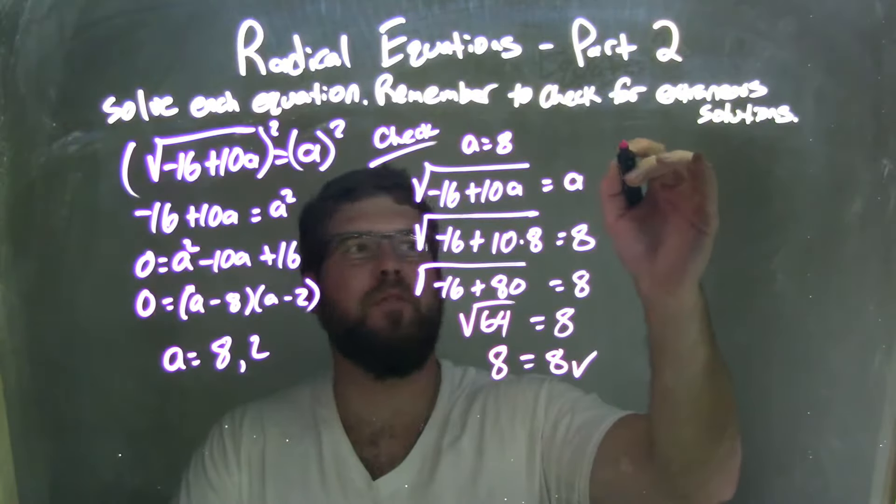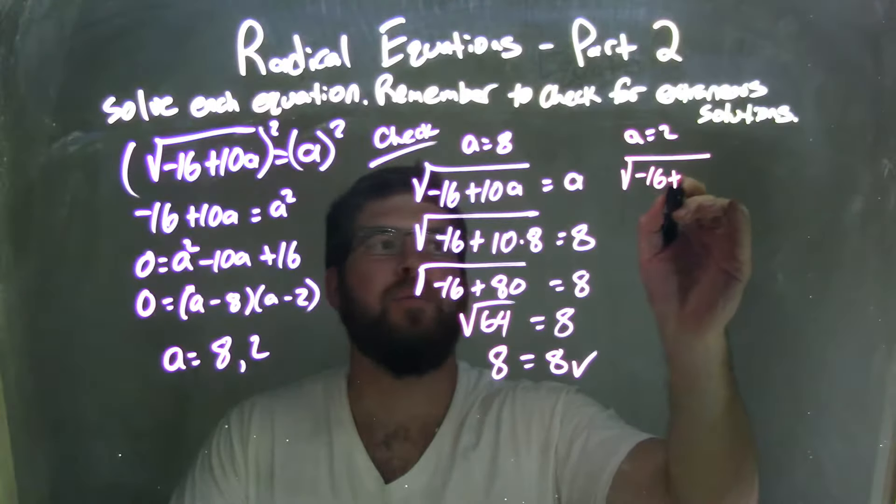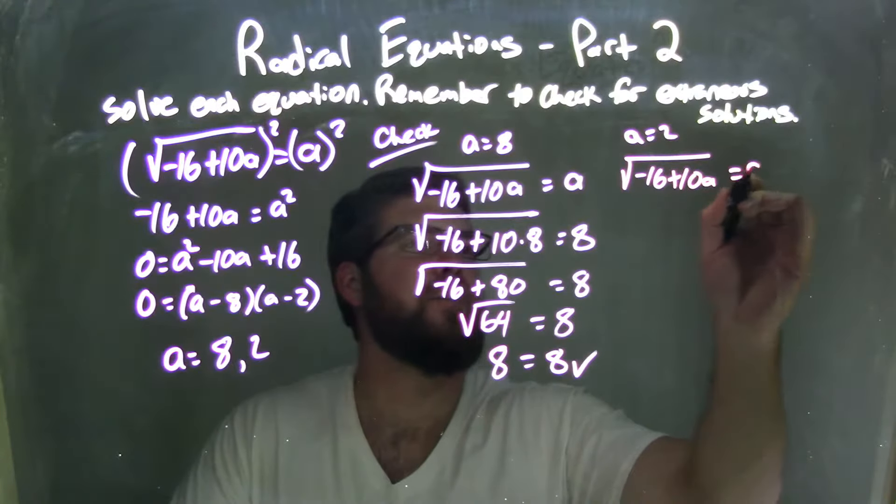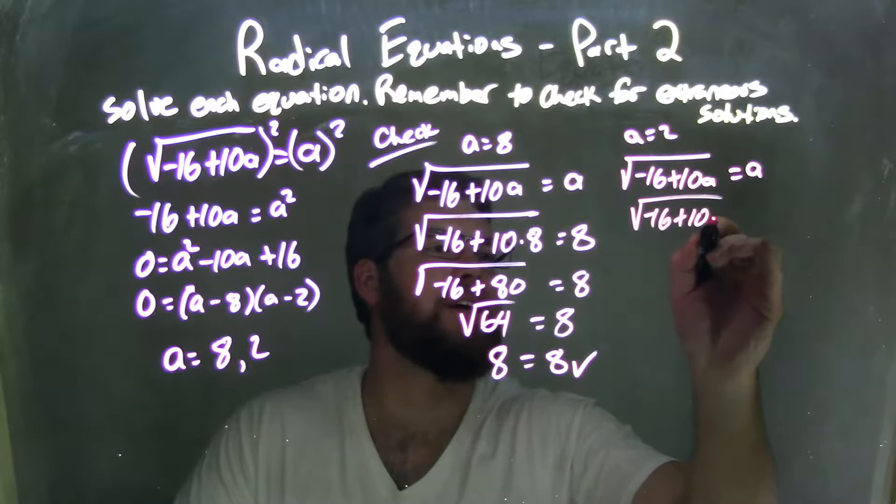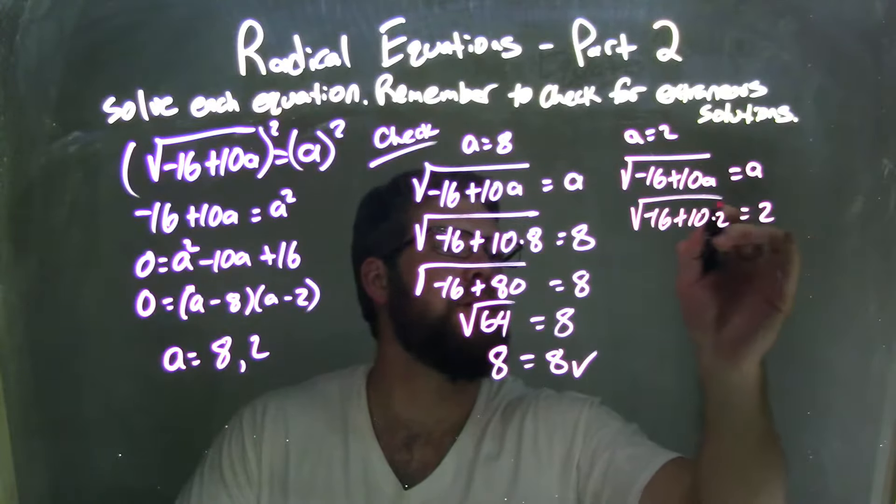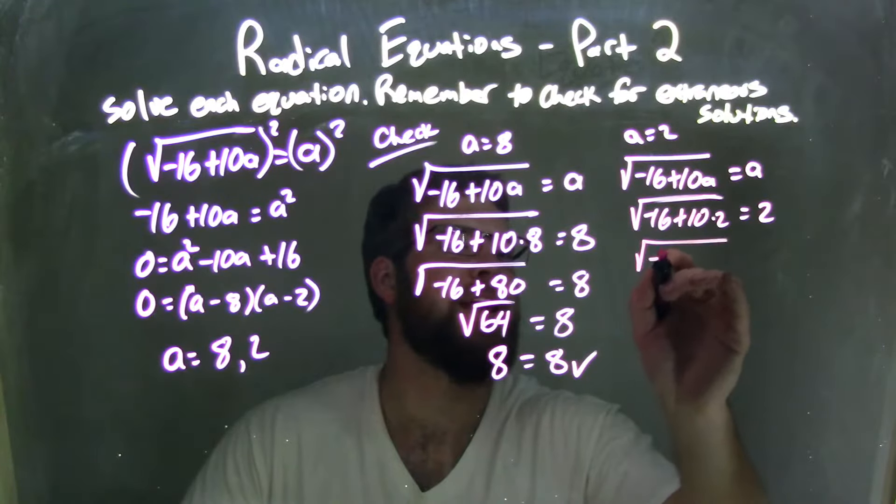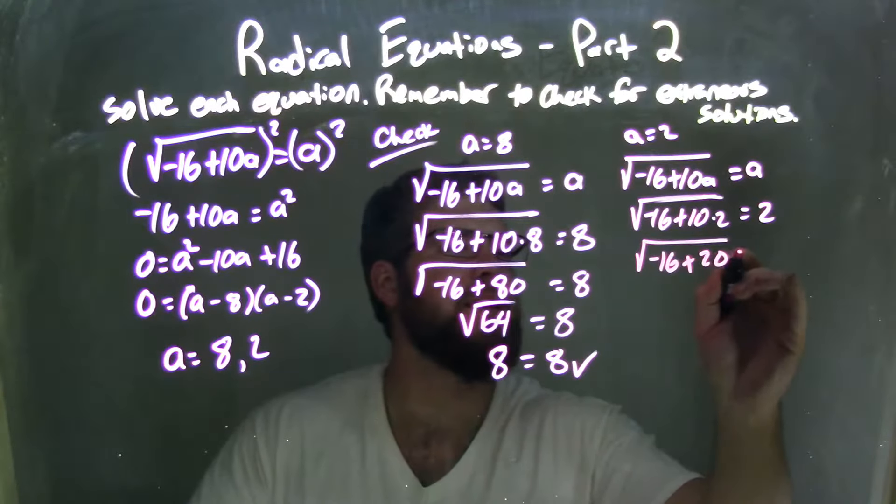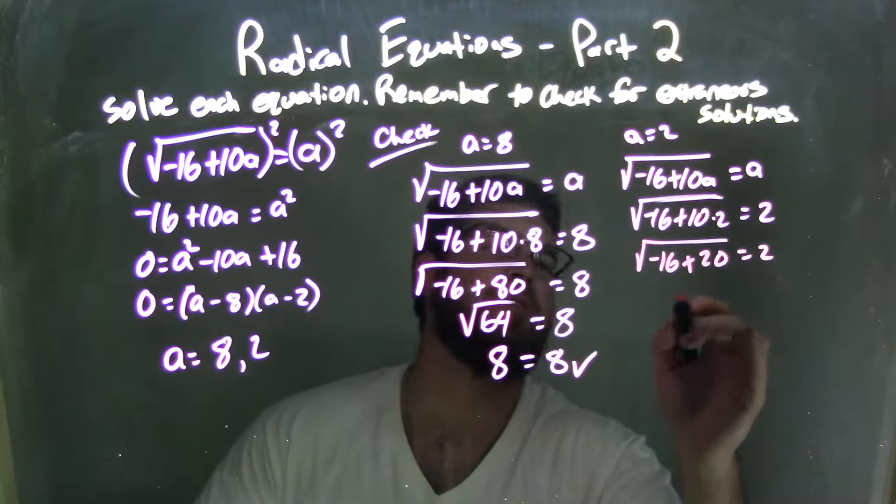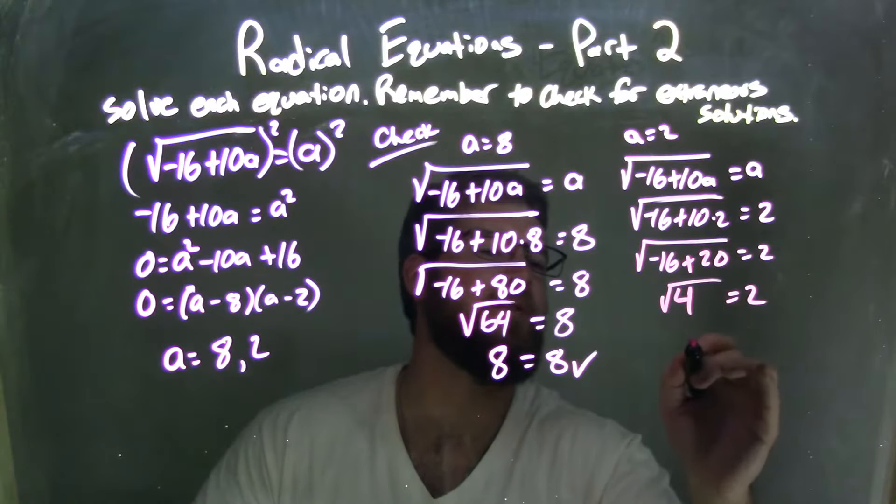But we have two parts. Let's check both of them. a equals 2. So I'm going to rewrite our equation: negative 16 plus 10a equals a, and we're going to plug in 2. So we have negative 16 plus 10 times 2 equals 2. Well, 10 times 2 is 20, so we have negative 16 plus 20 equals 2. Negative 16 plus 20 is 4, so we have square root of 4 equals 2. Square root of 4 is 2.